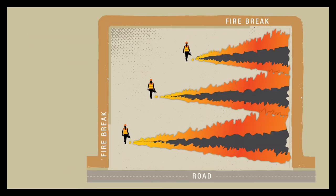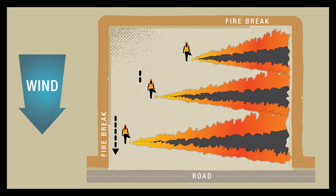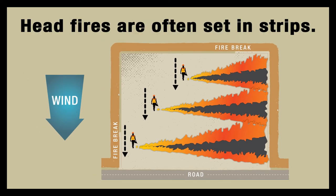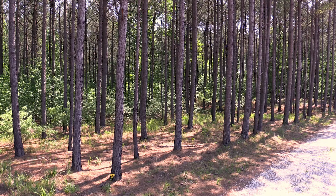In head fires, the fire travels in the same direction as the wind. Head fires produce the fastest rate of spread, highest flame lengths, and most intense fires. To manage this intensity, head fires are often set in strips. This is called a strip head fire.